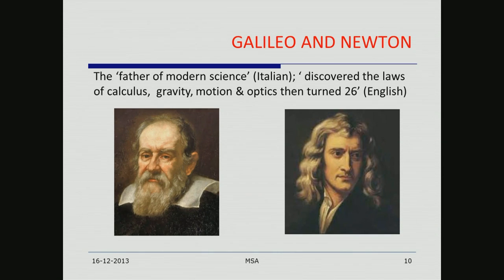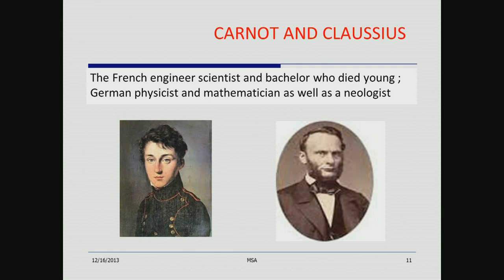Galileo was the father of modern science. Newton discovered the laws of calculus, gravity, motion, and optics — and then turned 26. Carnot and Clausius came a couple of centuries after Newton and Galileo. Carnot was a bachelor who died young and essentially came up with the second law. The German physicist and mathematician Clausius was also a neologist — he had a knack of coining words that remain in use even today. He introduced the word entropy.